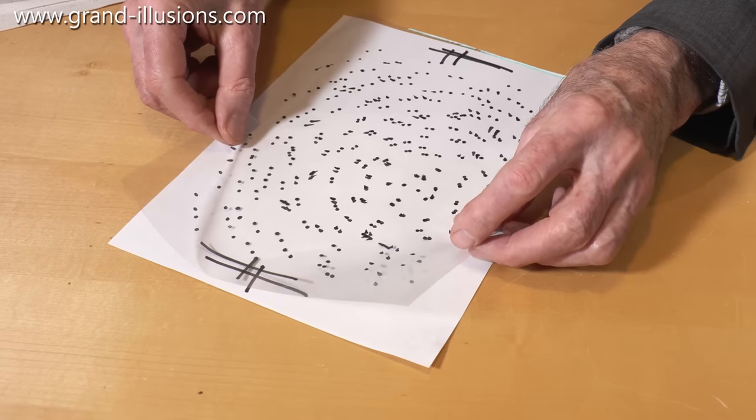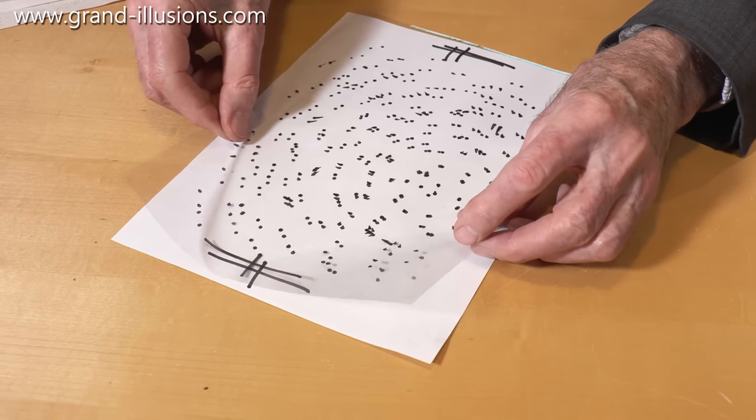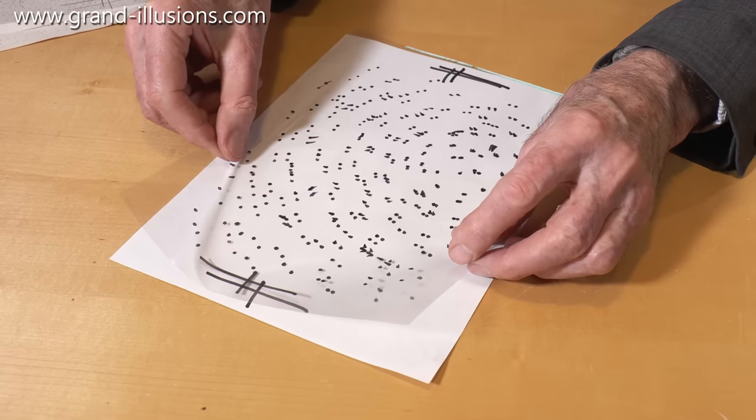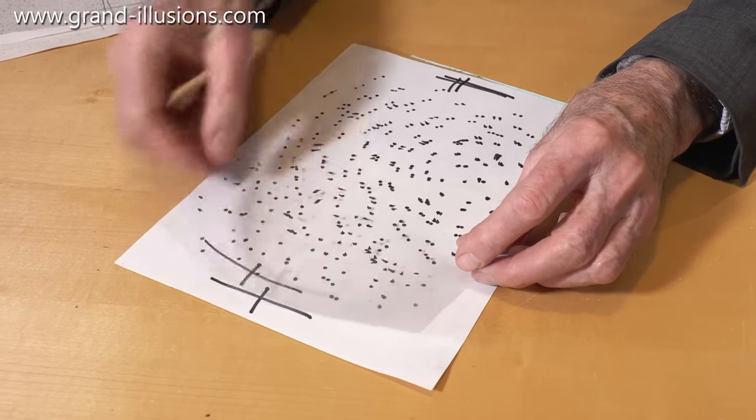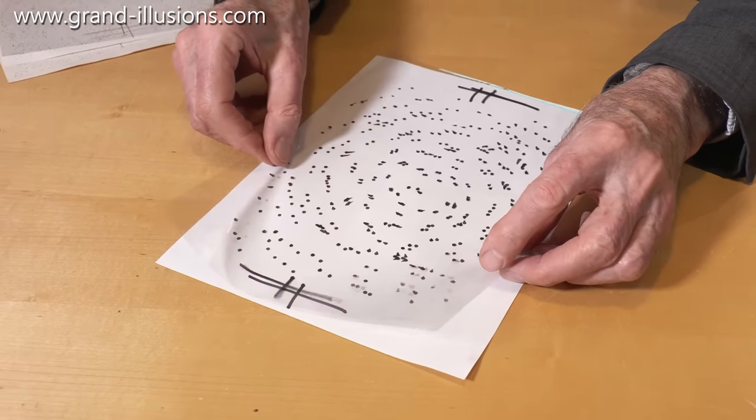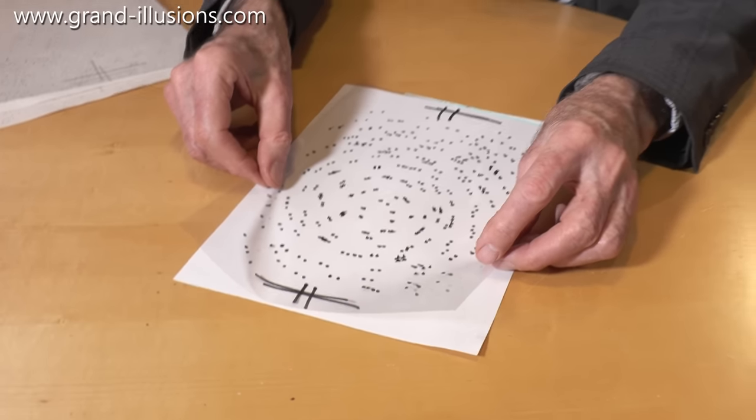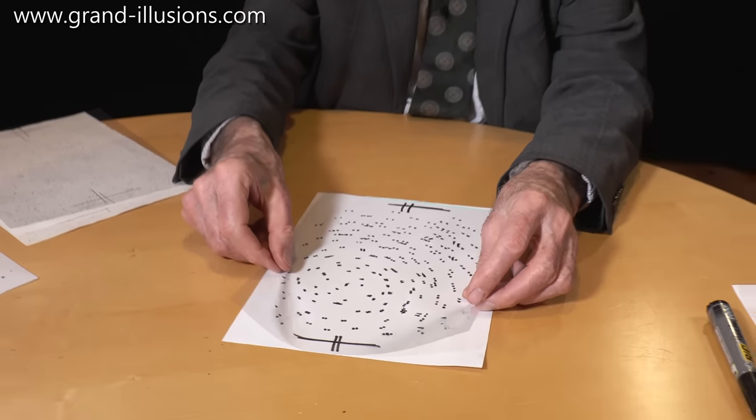Very interesting. As I move this, the actual position of the central orbit of the Sun, I suppose, in the center, moves around in a strange way. This is starting to look something like a copy of a solar system or a galaxy. Very interesting indeed.